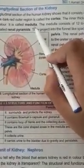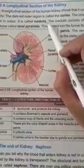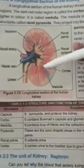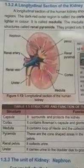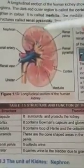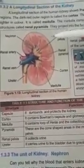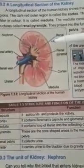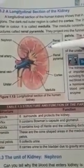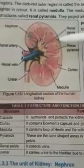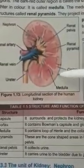A longitudinal section of the human kidney shows that it consists of two main regions. The dark outer region is called the cortex. The inner, thicker region is lighter in color and is called the medulla. Look at this diagram — this is a human kidney which we have cut lengthwise. There are two parts: the outer region and the inner region.